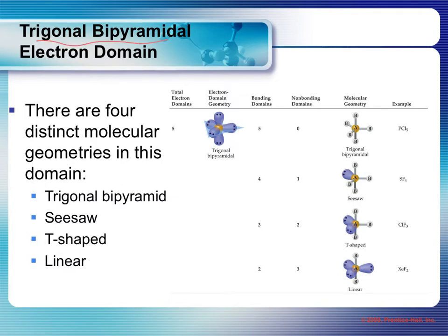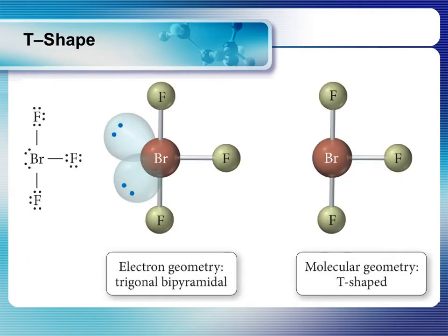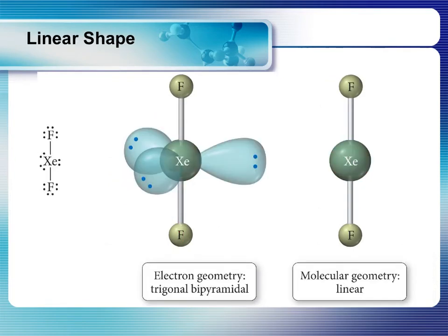Let's look at all of the trigonal bipyramidal electron domain geometries. If there are no lone pairs, the molecular geometry is simply trigonal bipyramidal. If there's one lone pair, it's called seesaw. Each of these shapes are pretty descriptive, so try to envision where the name came from — that will help you remember them. If there are two lone pairs, our shape is simply a T-shape. And if there are three lone pairs, we have a linear shape — which is really odd to end up with when you have three lone pairs. Normally when you draw the molecular shape, you leave the lone pairs out.